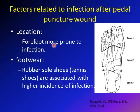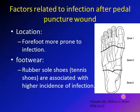The foot is divided into 3 zones regarding infection risk. Zone 1 runs from the metatarsal head to the end of the toes, zone 2 from the metatarsal head to the heel, and zone 3 is over the heel. Infection is more common in zones 1 and 3 because these areas have less soft tissue between the sole and the bone. In children, most cases of osteomyelitis are associated with a penetrating wound in zone 3, the calcaneus.